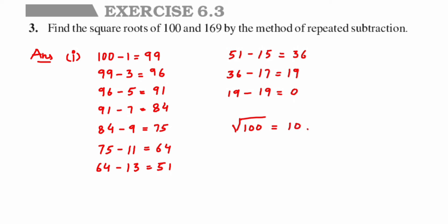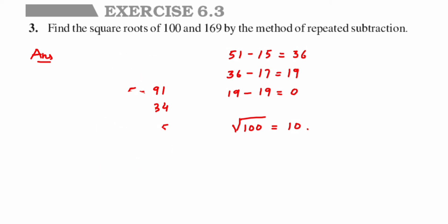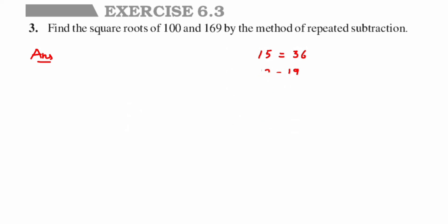I hope that's clear. Let's move on to the next one which is 169 — you do the same way until you get 0. I've done a separate video on repeated subtraction and I'll post the link in the description. So let's start with 169: 169 minus 1 is 168.